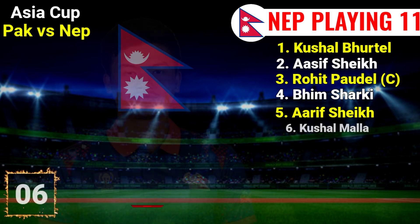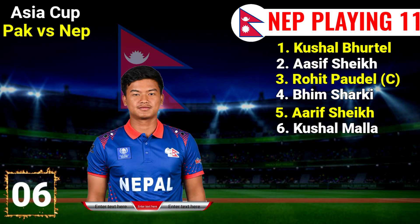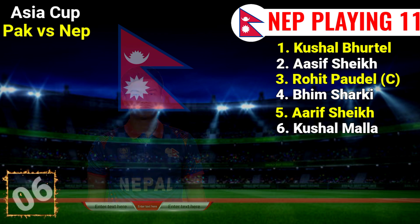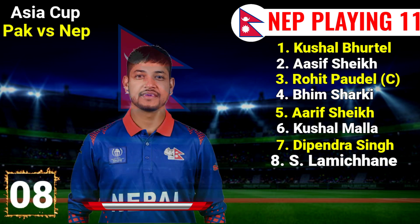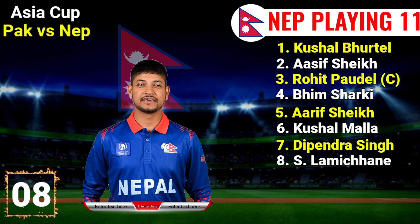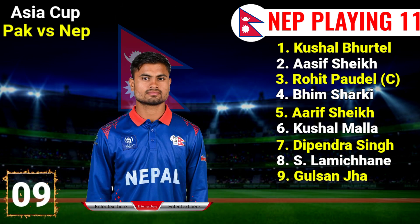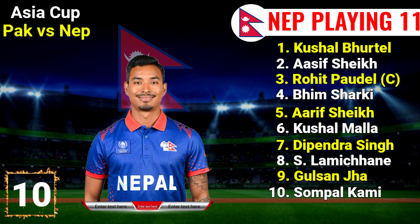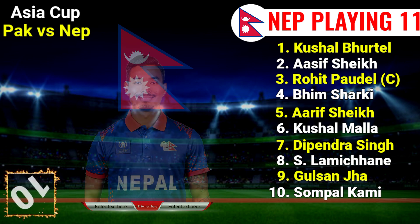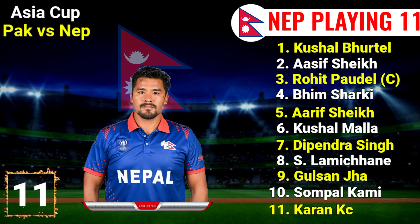Number 6 Kusul Mala, right hand all-rounder. Number 7 Dipendr Singh, right hand baller. Number 8 Sandeep Lemichane, right hand baller. Number 9 Gulsan Jha, right hand first baller. Number 10 Sompal Kami, right hand baller. Number 11 Karan Kesi, right hand baller.